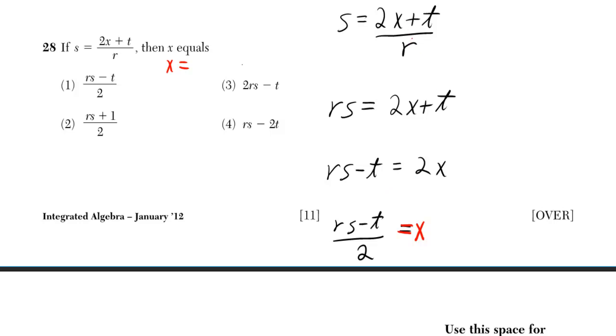One way to think about that is you need to get x on its own. So how can you get x on its own? One method you can do is you can first go from 2x plus t over r to 2x plus t. And then if you went from 2x plus t to 2x, and then from 2x to x, you would just have x on its own.